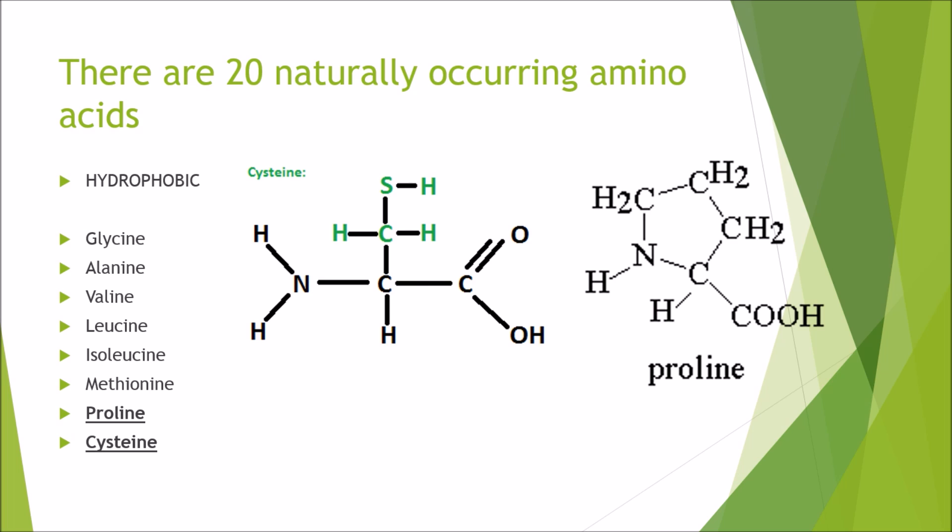We've got the hydrophobic groups which include glycine, alanine, valine, leucine, isoleucine, methionine, proline and cysteine. These two amino acids are really unique in terms of what they do to the protein. And I'll cover them in a minute.